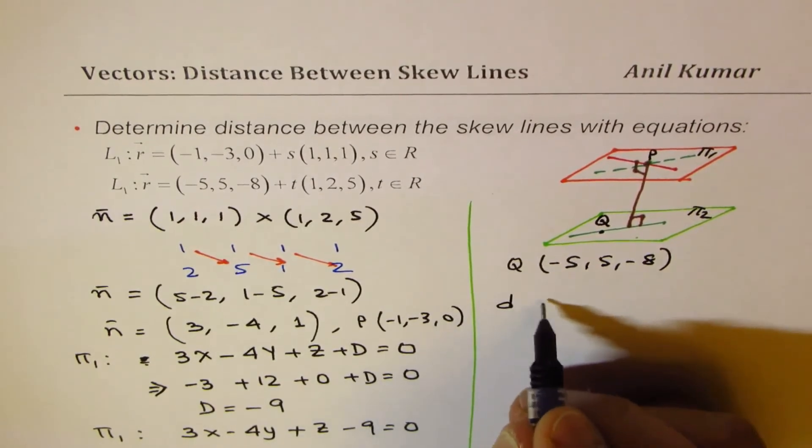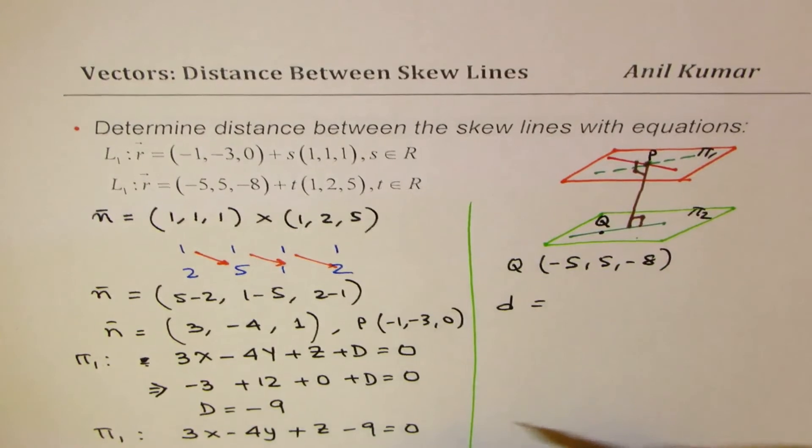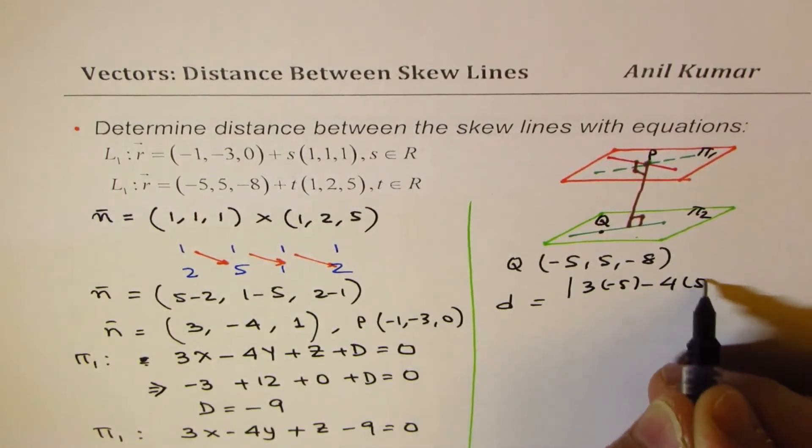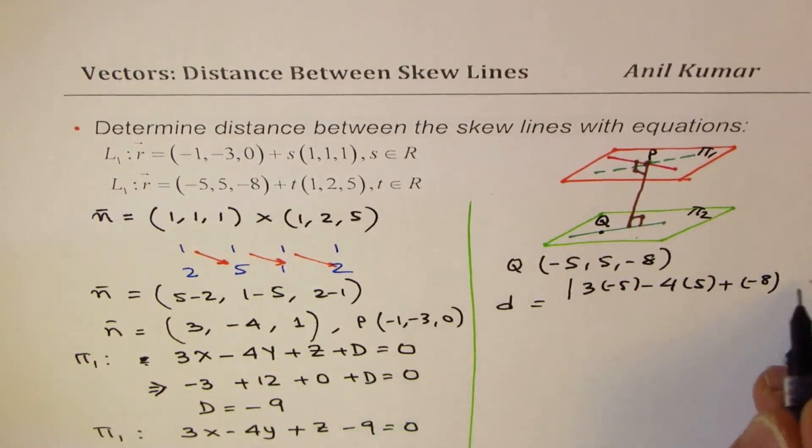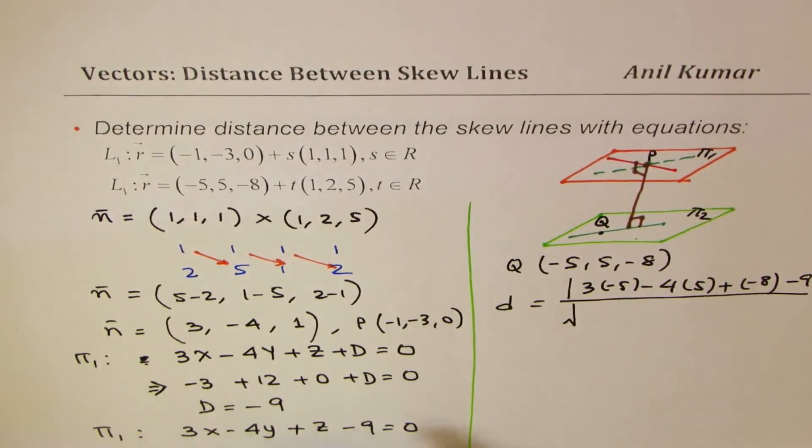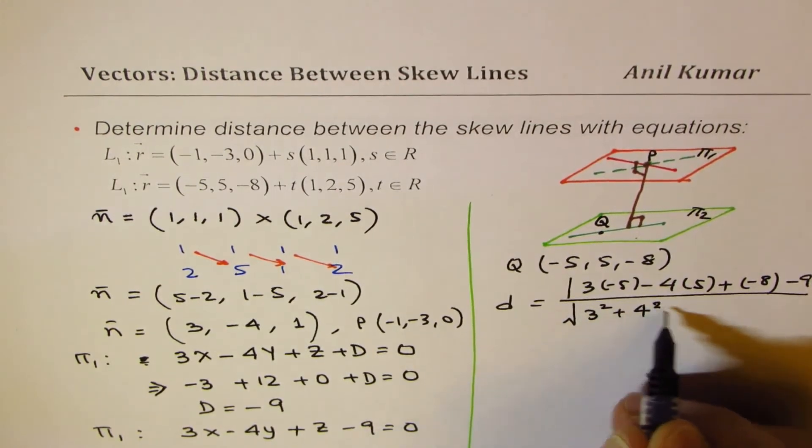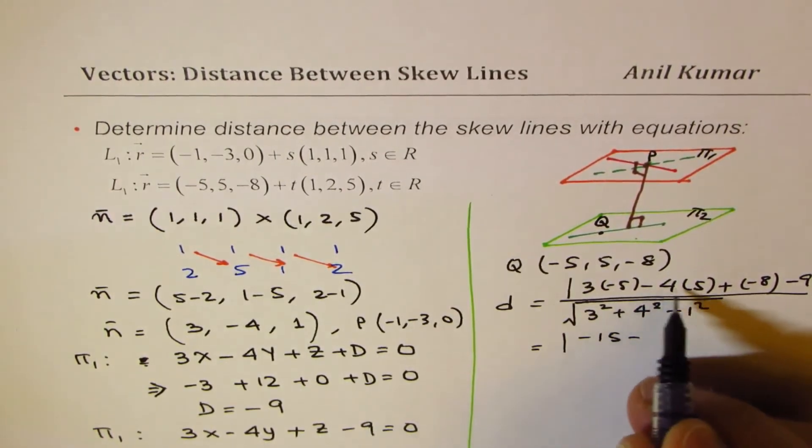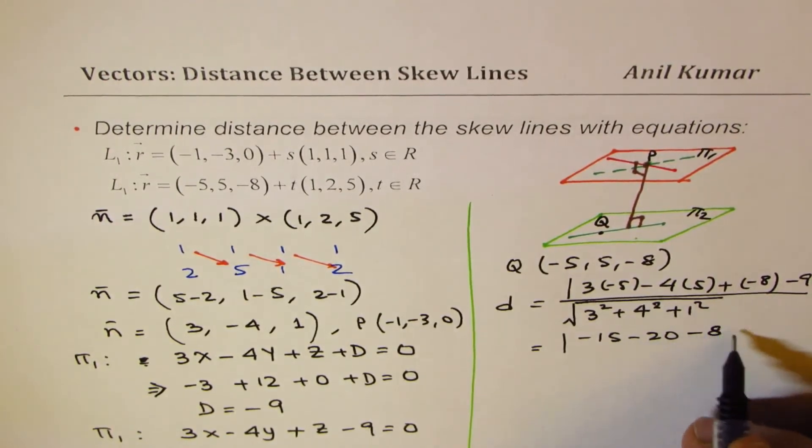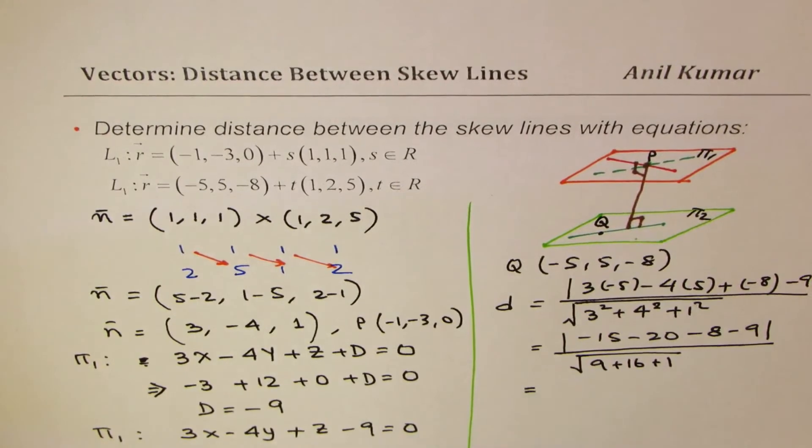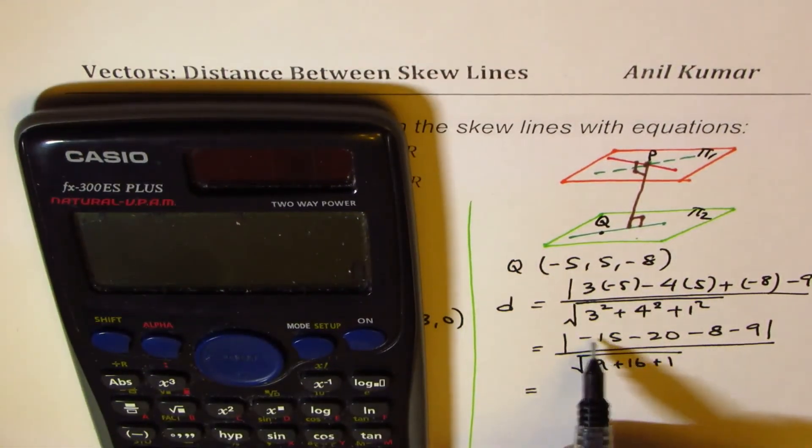So the distance d from this point to the plane: this distance will be absolute value of 3 times minus 5 minus 4 times 5 plus minus 8 minus 9 absolute value divided by the magnitude of the normal, which is 3 squared plus 4 squared plus 1 squared. So that gives you 3 minus 5 is minus 15, that is minus 20, and then we have minus 8 minus 9 over absolute value of 9 plus 16 plus 1. Let's use the calculator, we can now calculate the answer.